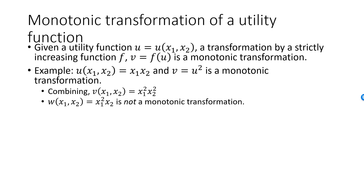However, the utility function w = x1²·x2 is not a monotonic transformation of u. Take for example the bundles (1, 2) and (2, 1). According to u and v, the utility of these bundles is the same, while according to w, the utility of the second bundle is strictly higher.